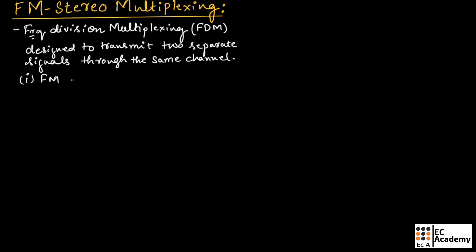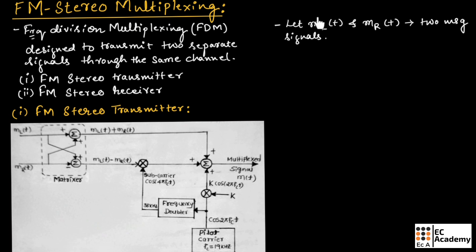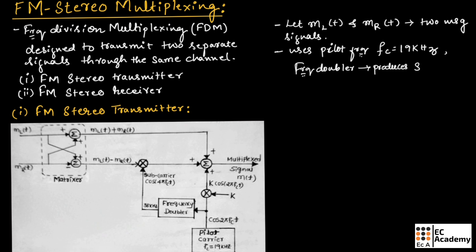The first part is the FM stereo transmitter and the second is the FM stereo receiver. Let us consider ML(t) and MR(t) as two message signals that are picked up by left-hand and right-hand microphones at the transmitting end of the system. This transmitter uses a pilot frequency Fc equal to 19 kilohertz. It also uses a frequency doubler which produces the subcarrier. This is the block diagram of the FM stereo transmitter.